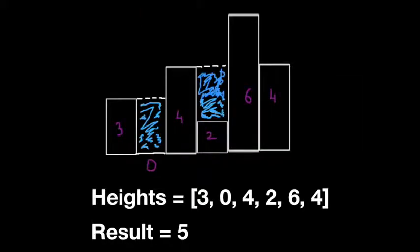Let's say you are given buildings with heights 3, 0, 4, 2, 6, 4. Here 0 means it is ground, so the total trapped water will be 5. It will be between building 3 and 4, and between building 4 and 6.